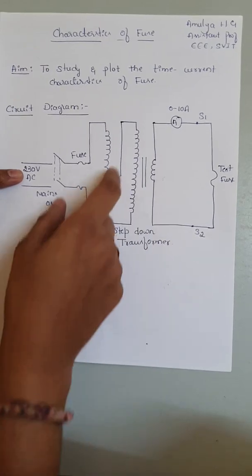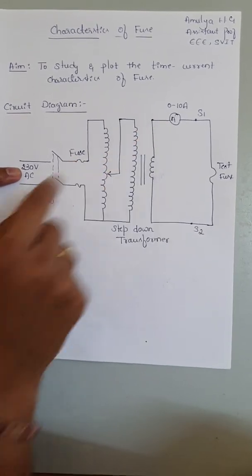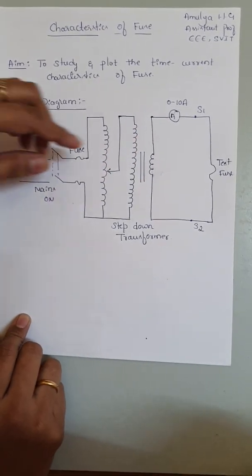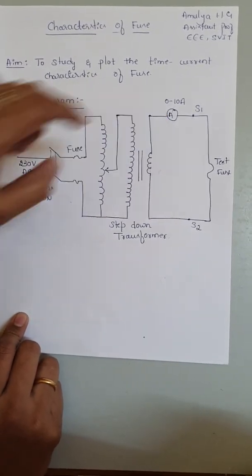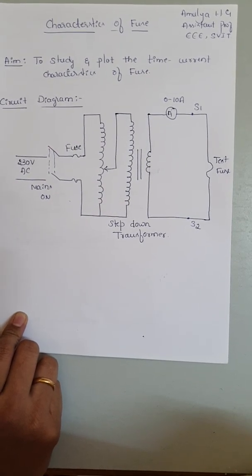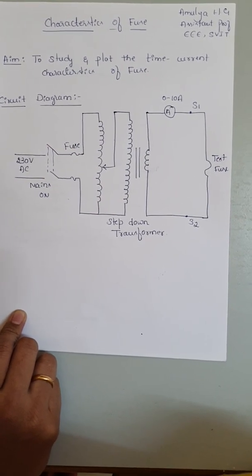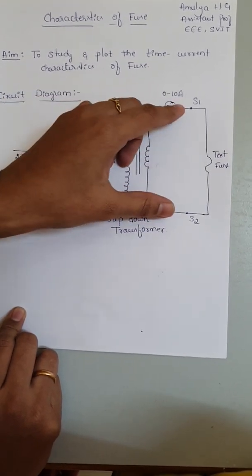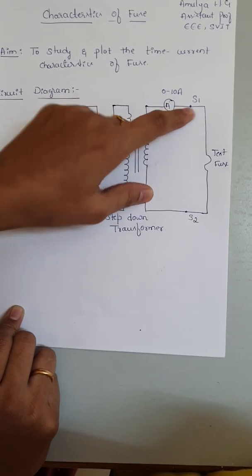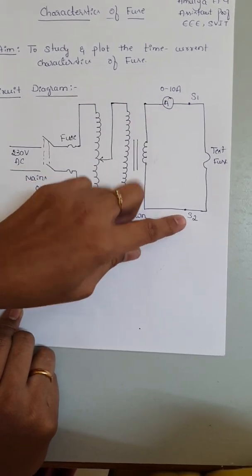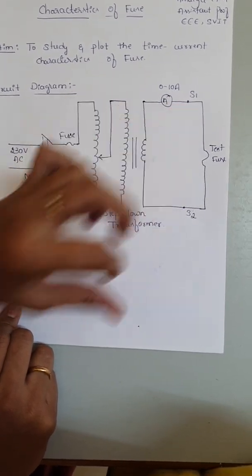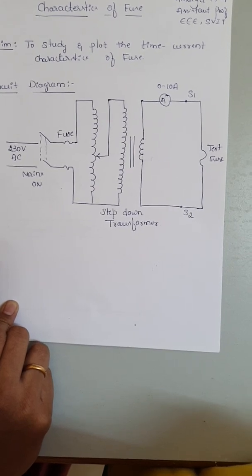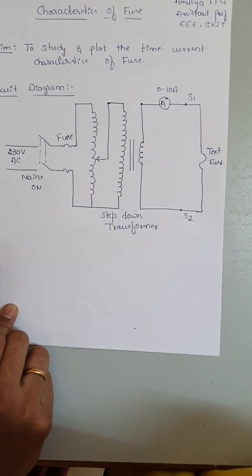The supply voltage then goes into the ammeter, where we measure the operating current at which the fuse will melt. There are two terminals, S1 and S2, across which we connect our test fuse or fuse material.